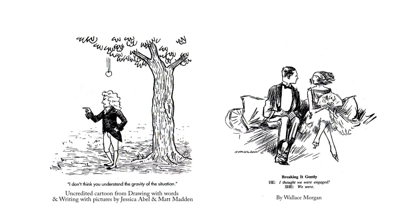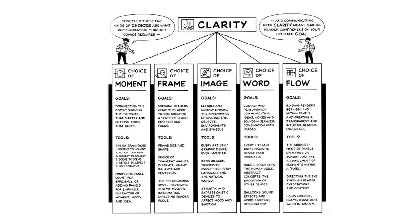Here we have Newton about to be hit in the head, and it says 'I don't think you understand the gravity of the situation.' And a classic newspaper cartoon called Breaking It Gently: He — 'I thought we were engaged.' She — 'we were.' Very subtle. So these are all examples of good clarity: a strong choice of moment, choice of frame, choice of image, choice of word, and choice of flow.